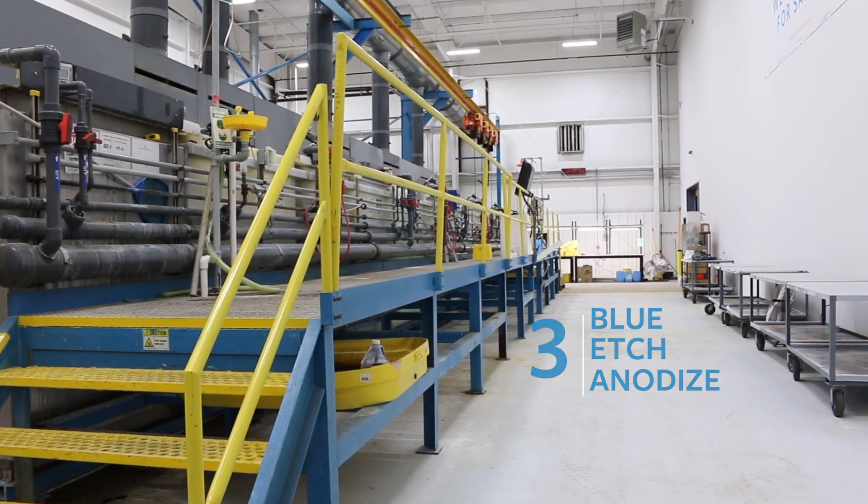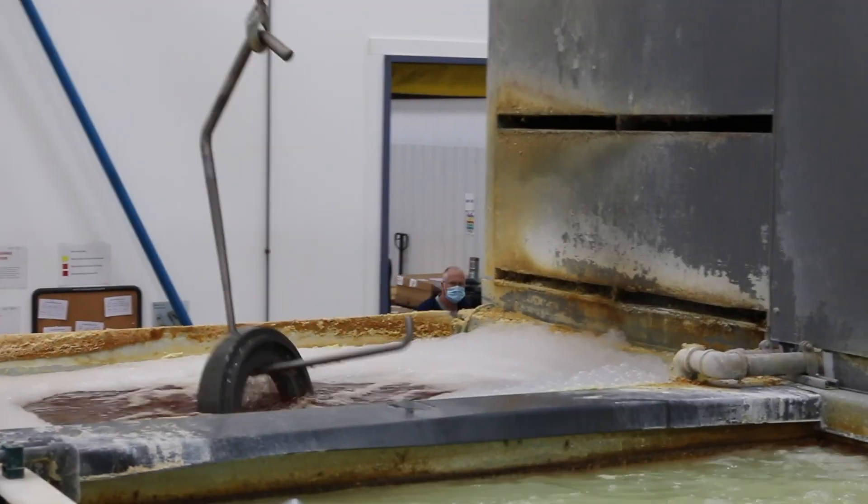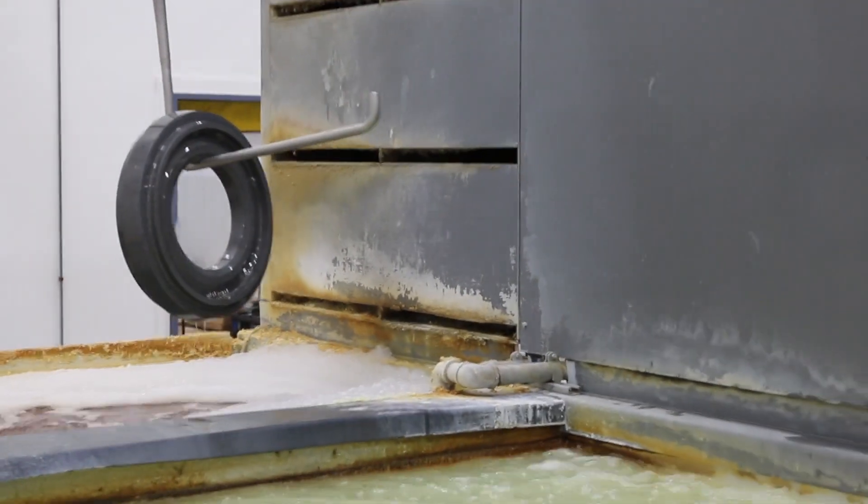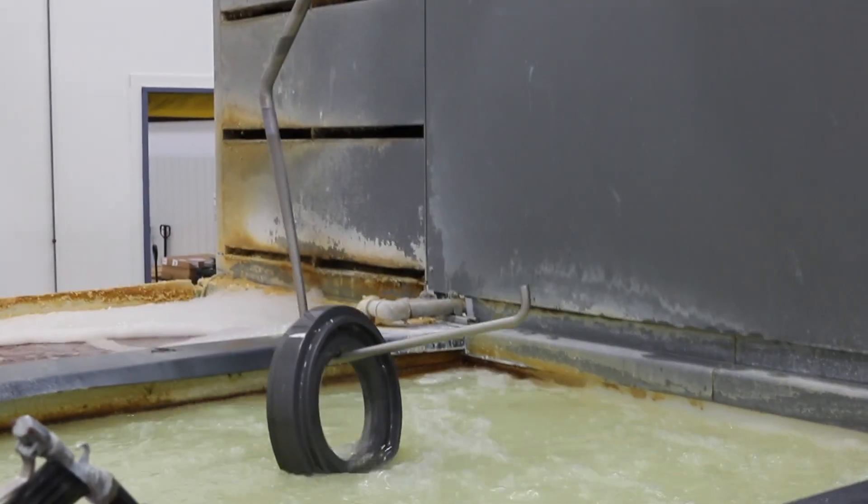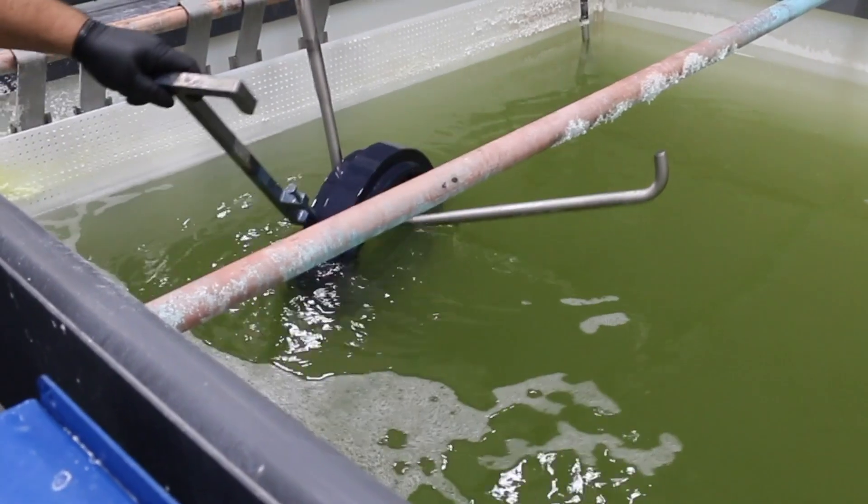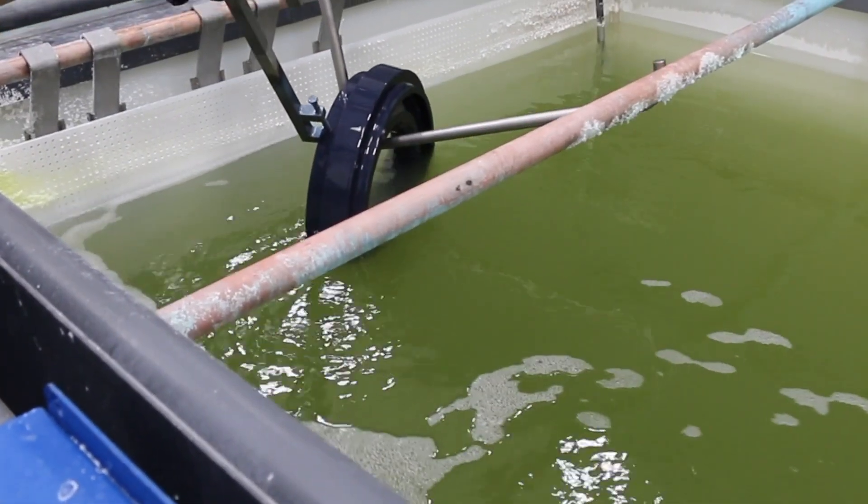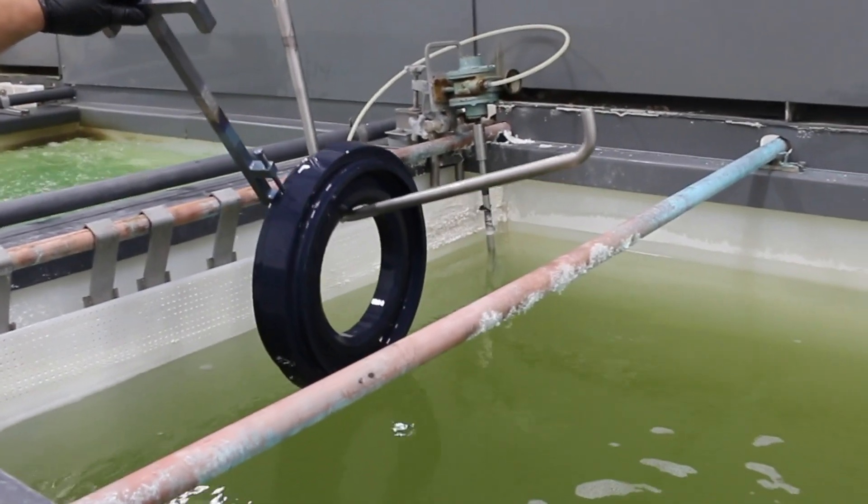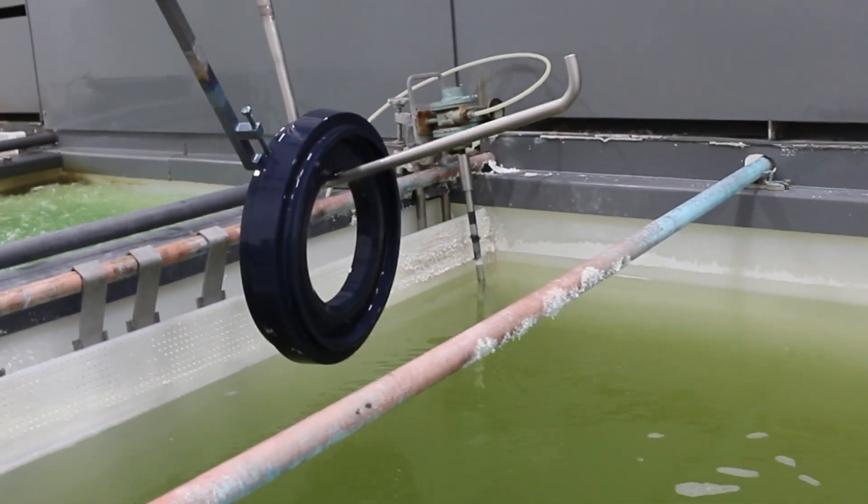Blue Etch Anodizing is a specialized highly sensitive etch inspection method for titanium alloys. BEA has been recognized to be one of the most reliable methods for inspection of critical rotating parts used for the aerospace and power generation industries. It was developed to detect surface abnormalities that relate to metallurgical, material, and machining related discontinuities.